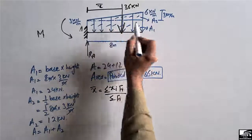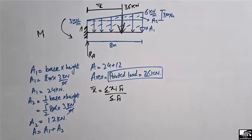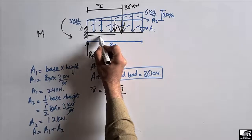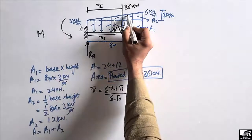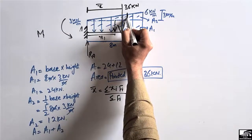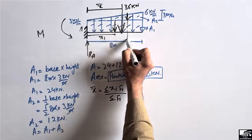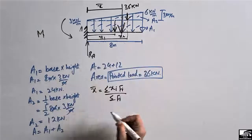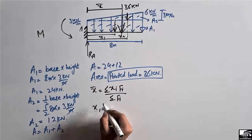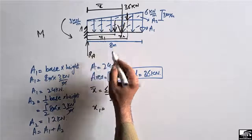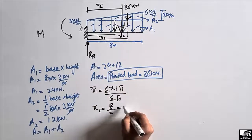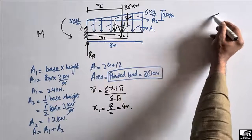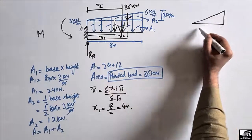For the rectangle, its centroid x1 will be at half of the 8-meter length, so x1 equals 4 meters. For the triangle, the centroid x2 is located at two-thirds of the length from the starting point.